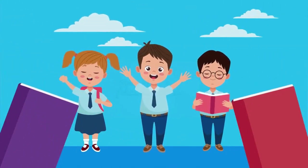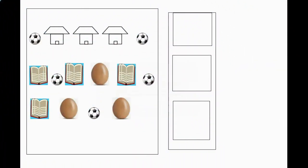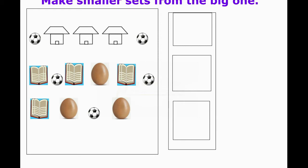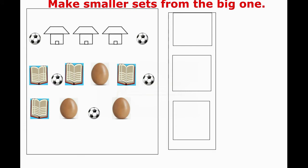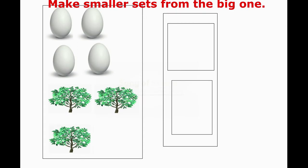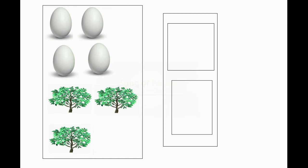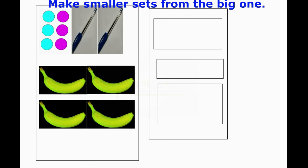Let us now form sets from big sets. How many sets have you formed? Form three new sets from the big one given. Now form two new sets from the big one. Form other sets from this big one.